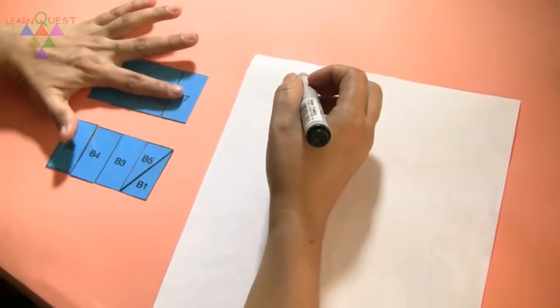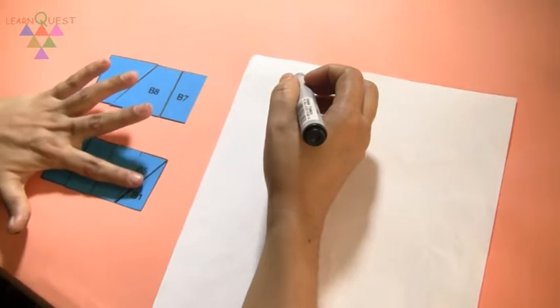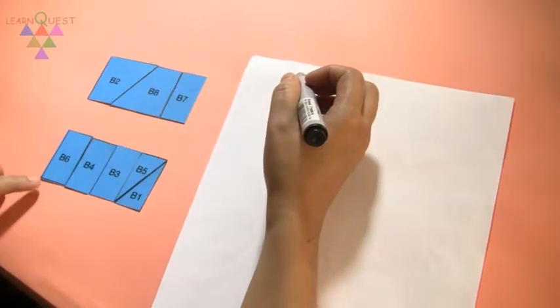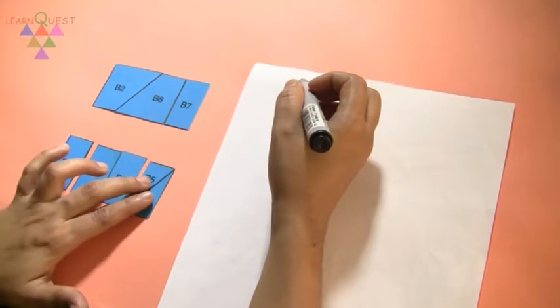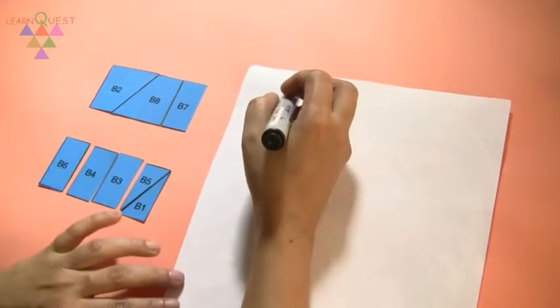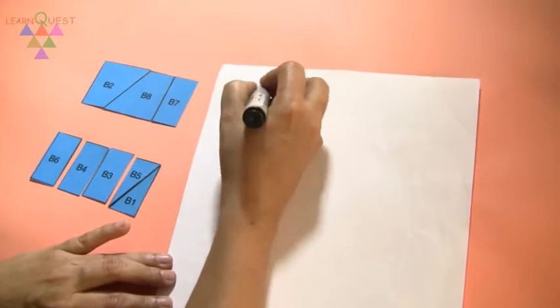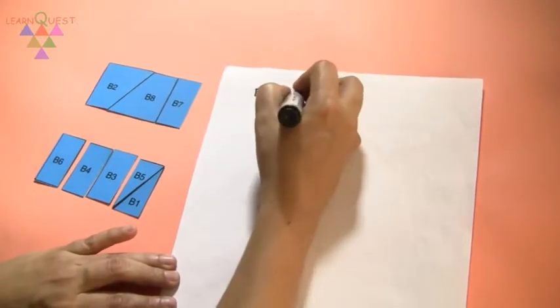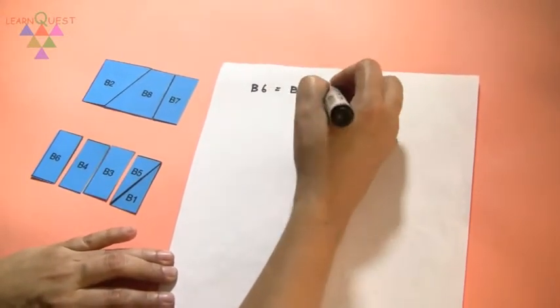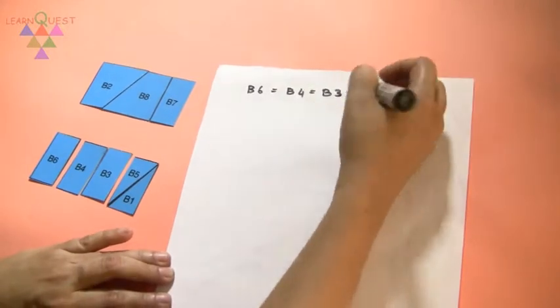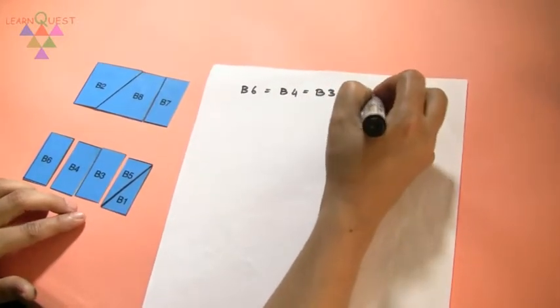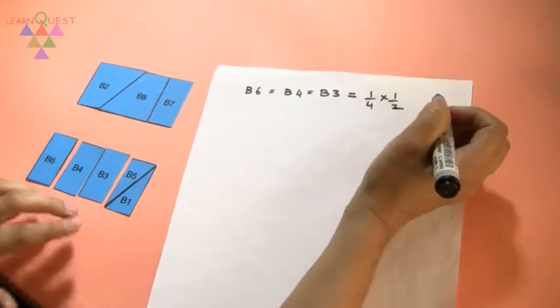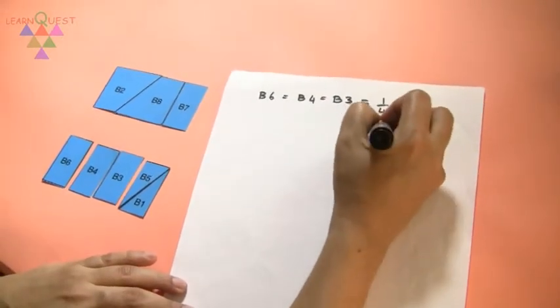We'll solve puzzle B. Now these together make a half. So this is a half and this is a half. In this half it's divided equally into 4 parts. So B6 is the same as B4 which is the same as B3, and they are all 1/4 of a half, which means they are all 1/8.